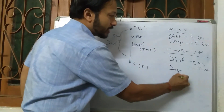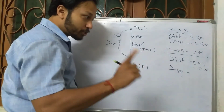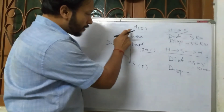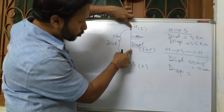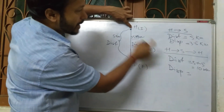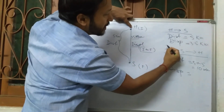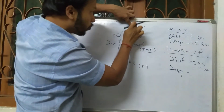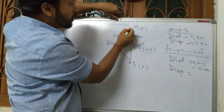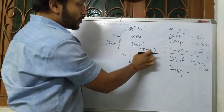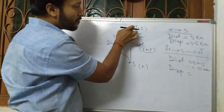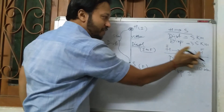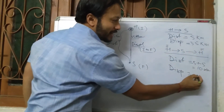What is my displacement? As I told you, displacement is initial to final. You started from home, went to school, and came back home. So your initial position is home and your final position is also home. Since initial and final positions are the same, the displacement is zero.